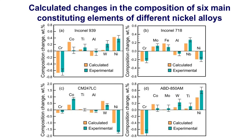Finally, inductively coupled plasma optical emission spectroscopy (ICP-OES), which is used for the composition measurements, is known to have uncertainties, especially for high melting point elements and powder feedstocks. However, the calculations predict the correct trend in composition change. For example, both the experimental and computed results show that the composition changes for Cr and Al are negative, while positive composition changes are observed for the other elements.